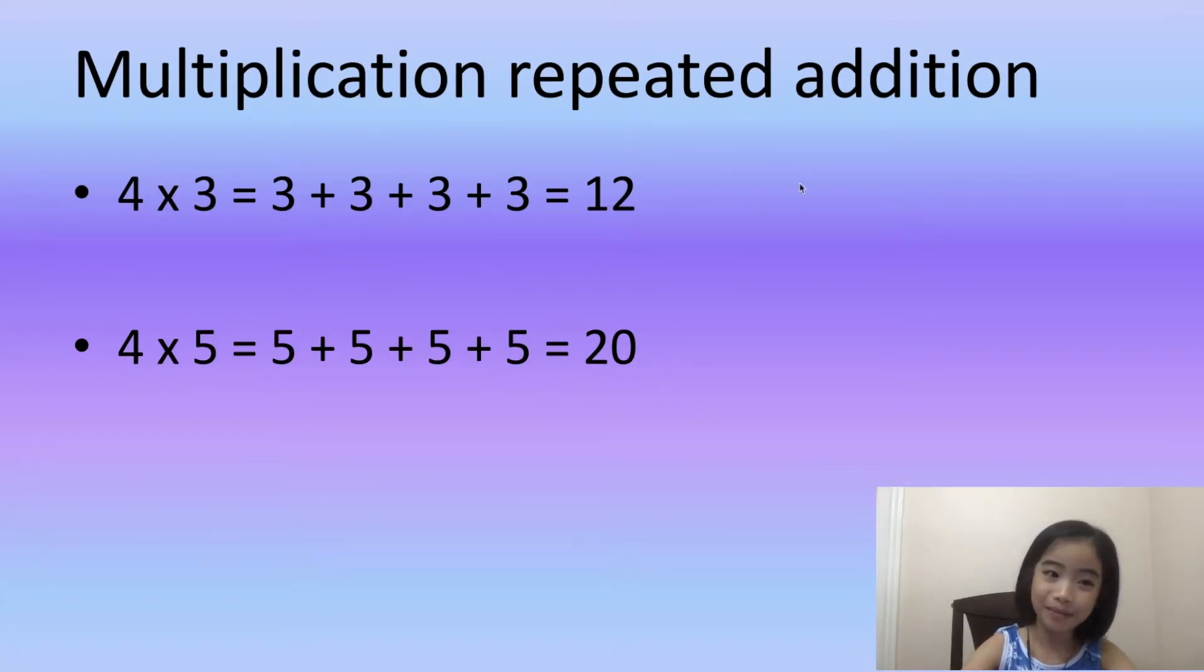For example, here I have four times three, which is equal to three plus three plus three plus three equals twelve. And here I have four times five equals five plus five, four fives added together equals twenty.